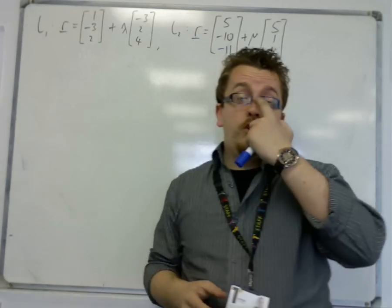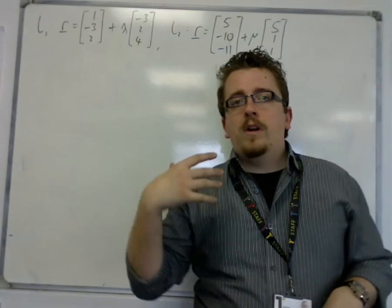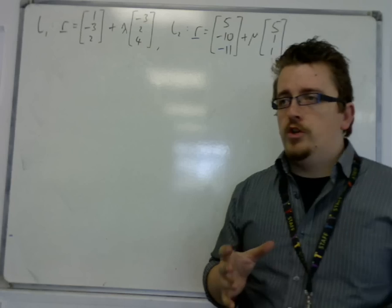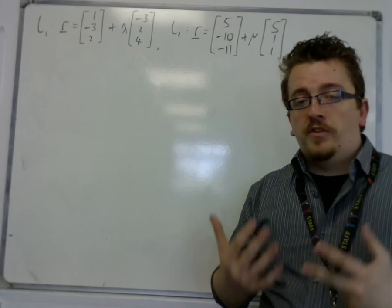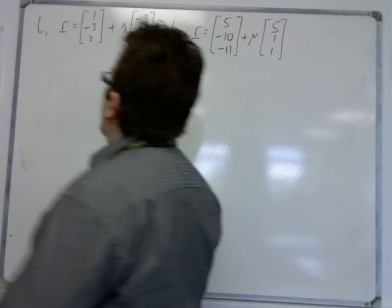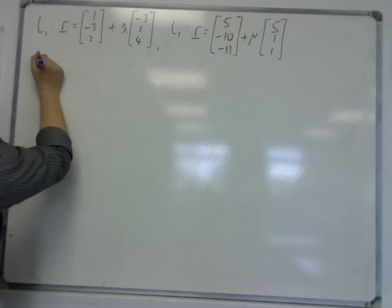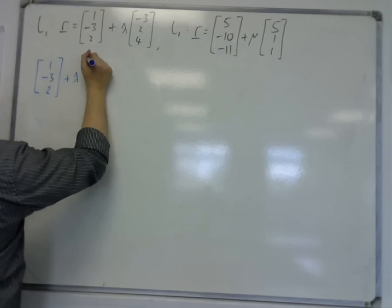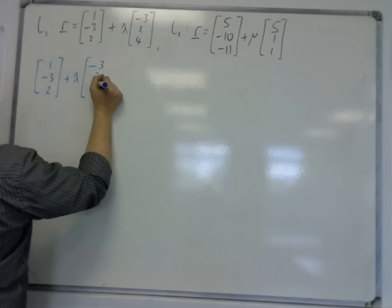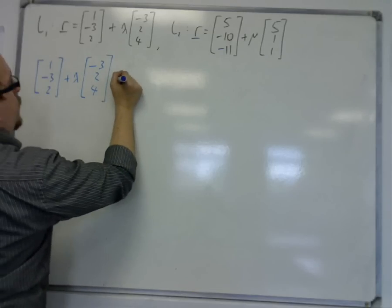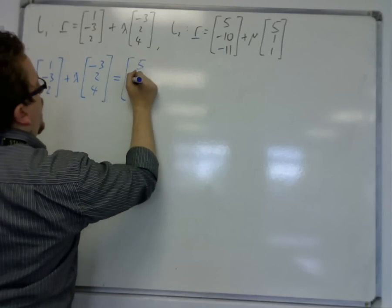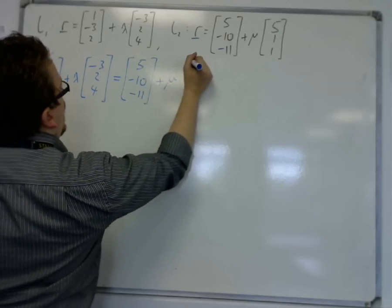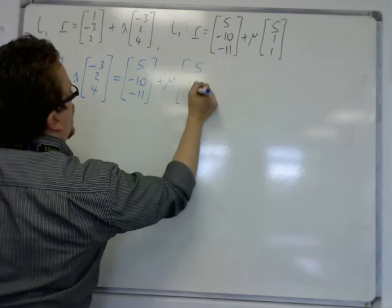Now in two dimensions, the way that you figure out where lines intersect is through simultaneous equations, and it is very much the same in three dimensions. So you put one equal to the other. So 1 minus 3, 2 plus lambda lots of minus 3, 2, 4 is equal to 5 minus 10 minus 11 plus mu lots of 5, 1, 1.